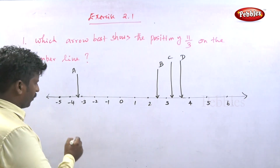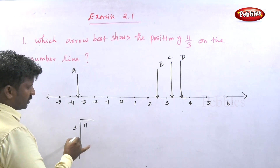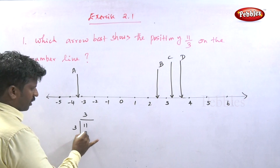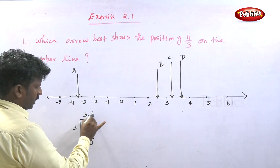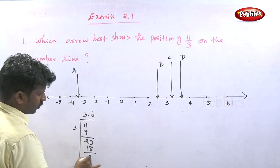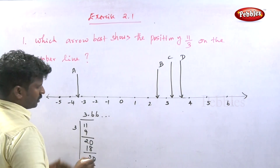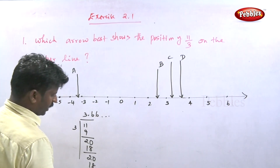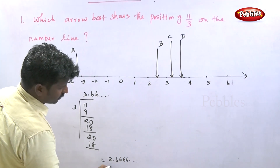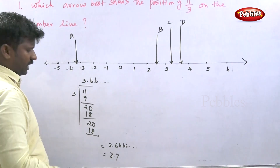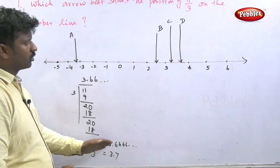Let's divide 11 by 3. Three threes are nine, remaining two — so we get 3.066... Three goes into the remainder giving 3.666... repeating. So 11 by 3 equals approximately 3.666, which is near 3.7.